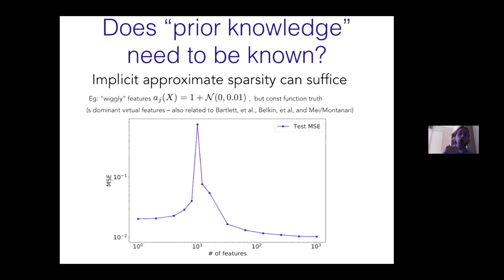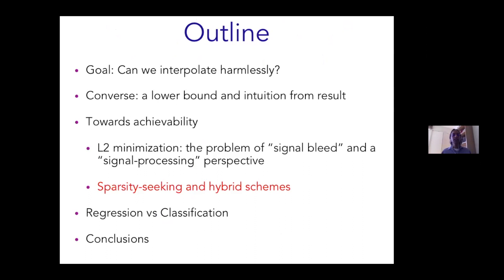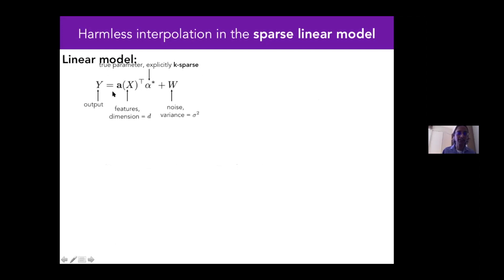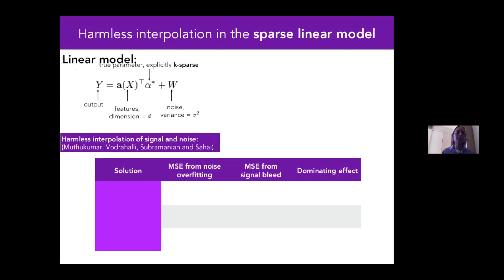So L2-style minimization can work if your feature family has a covariance structure that already favors a much lower-dimensional set — a subspace whose dimensionality is much smaller than the number of samples. With this understanding of when L2 minimization works, we can now think about what happens with explicit sparsity: the same model as before except the true parameter is explicitly k-sparse. We look at what happens for different solution strategies, considering the mean squared error from potentially overfitting the noise.